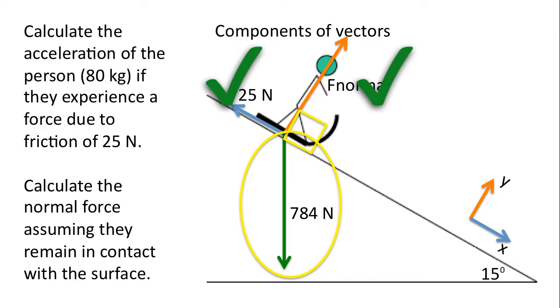The problem is gravity. Gravity doesn't point in the x or the y direction. So we're going to create a triangle, and we're going to find the components. We're going to solve for fgx and fgy.